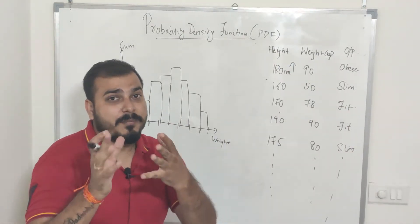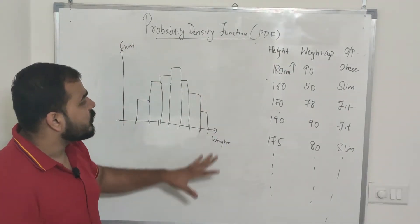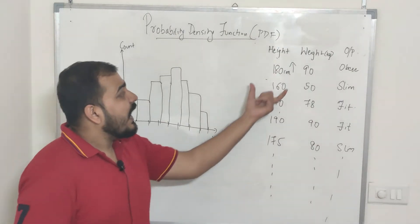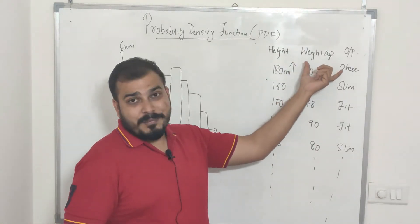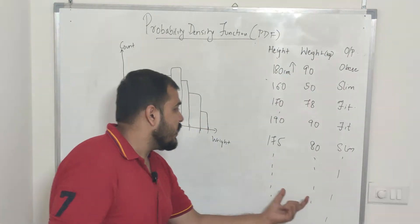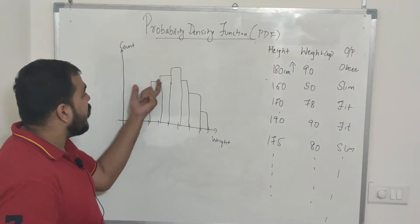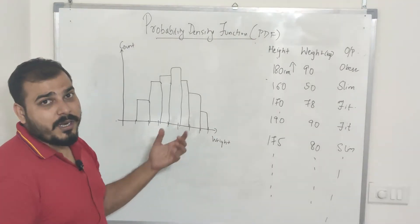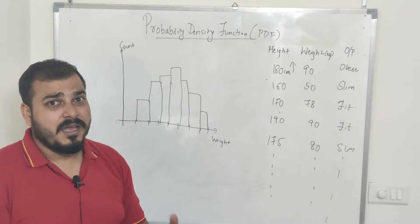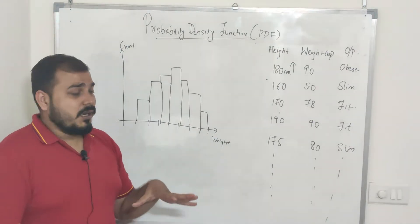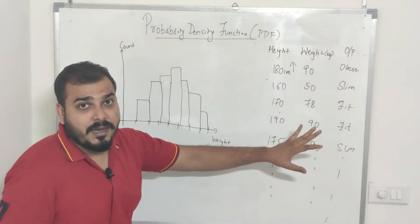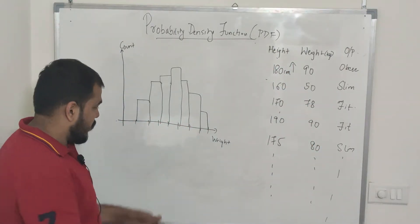Now going into probability density function — in my previous section I've already discussed about histograms. This is how my histogram basically looks like. I've used the features height and weight in my dataset, and I'm just considering the weight feature and trying to plot all the points in the form of histograms. If you don't know about histograms, see my previous video in this playlist.